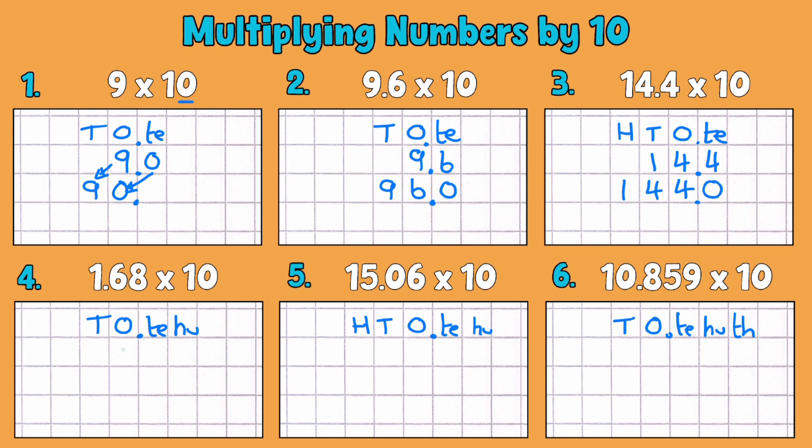So 1.68 is our next example. Now we've got some hundredths as well, and just because you've got more decimal places doesn't mean that you do anything different when you're times-ing by 10. So we've got our one which gets 10 times greater and becomes 10. Our six tenths, 10 times greater, becomes six whole ones. And then our eight hundredths, 10 times greater, becomes eight tenths for 16.8.